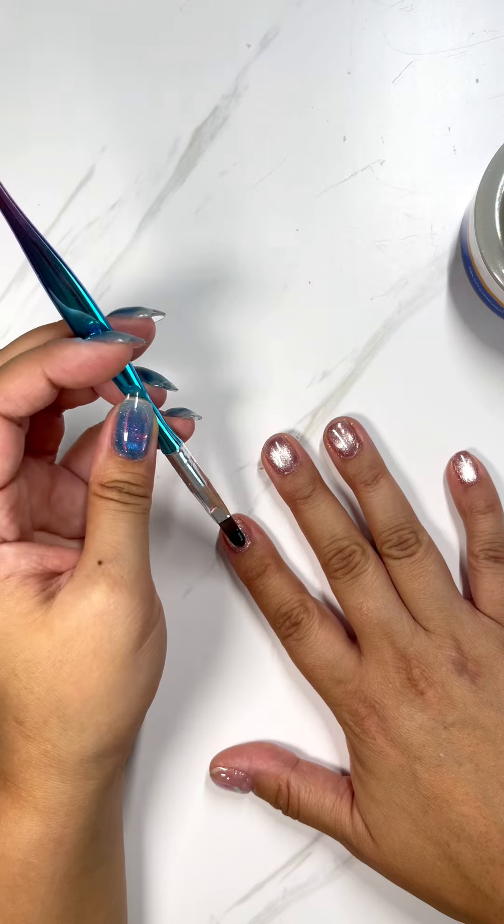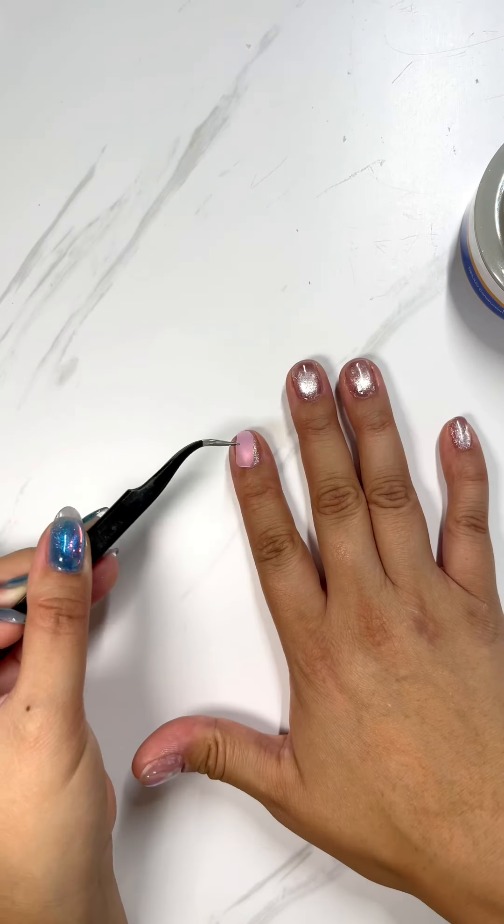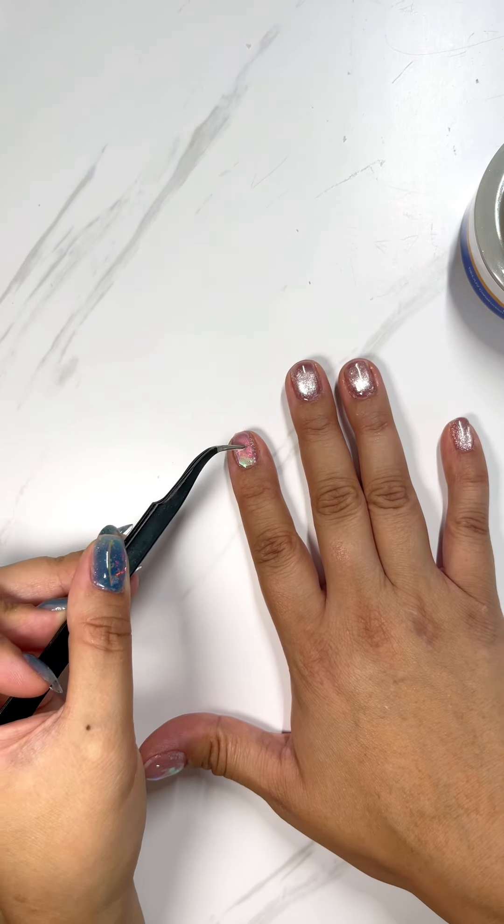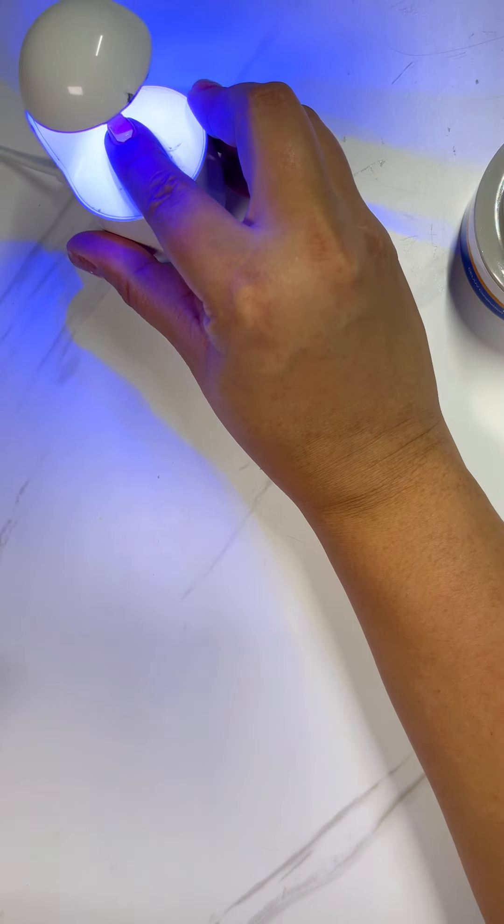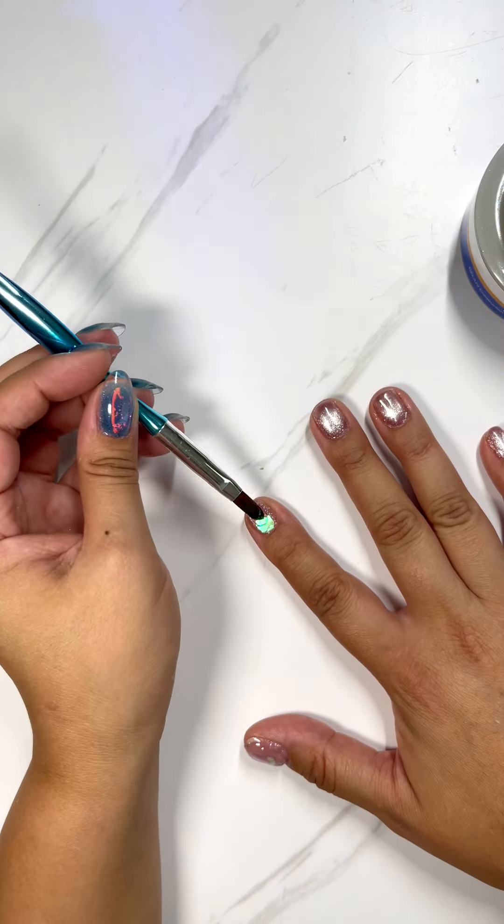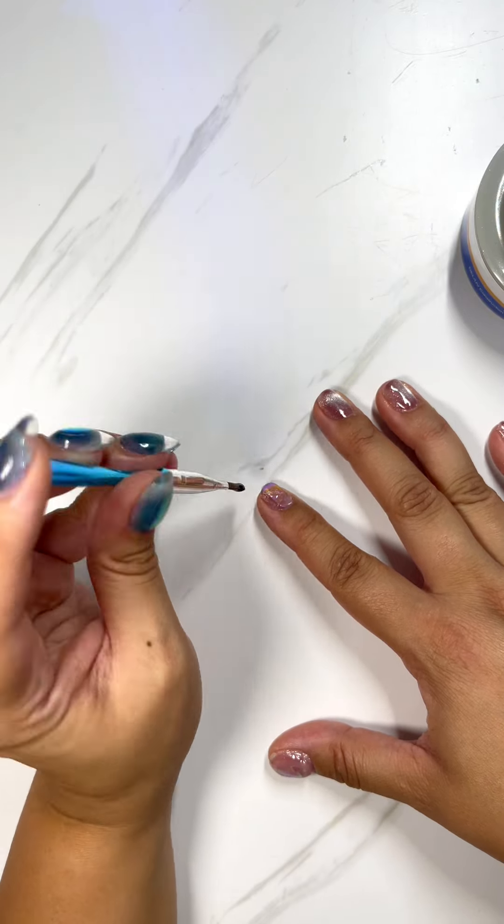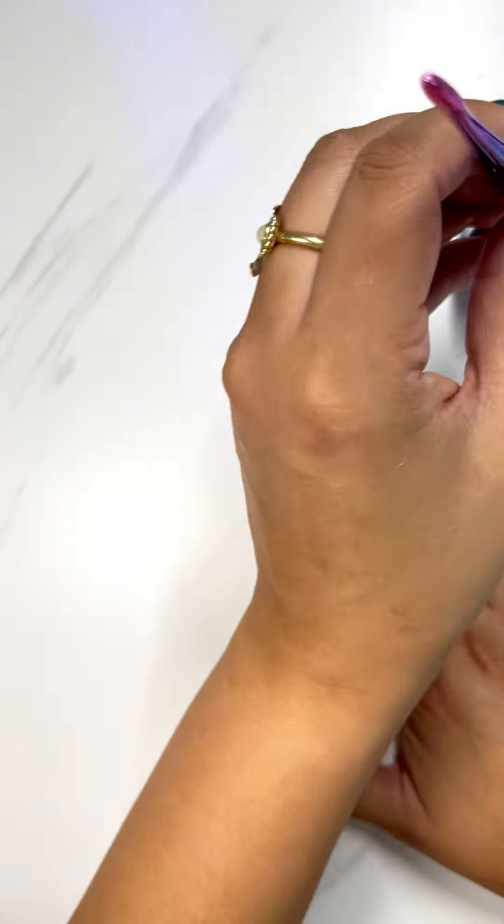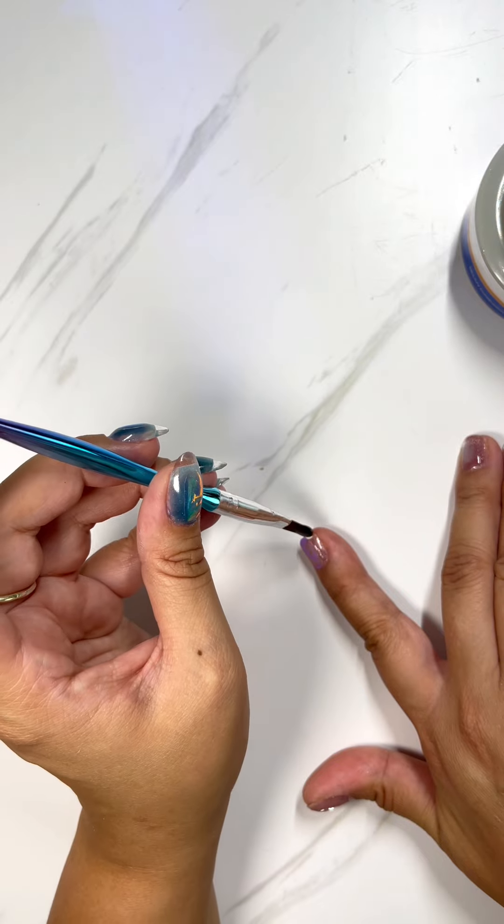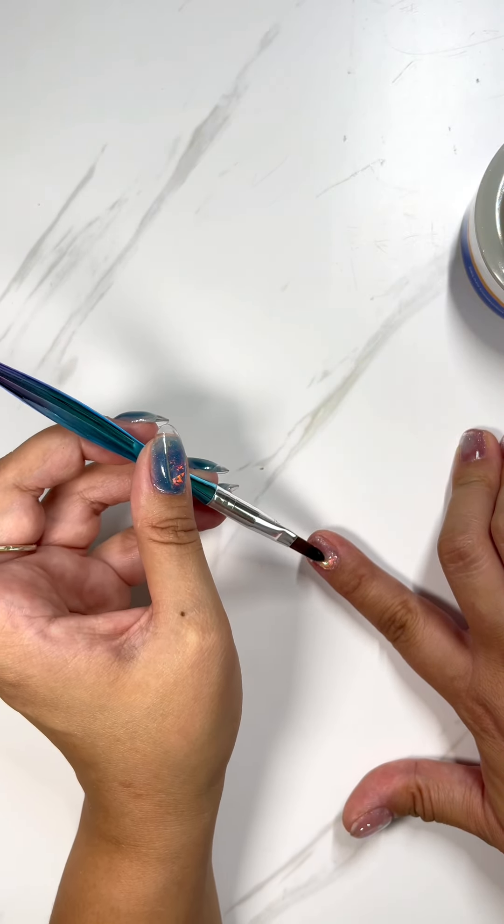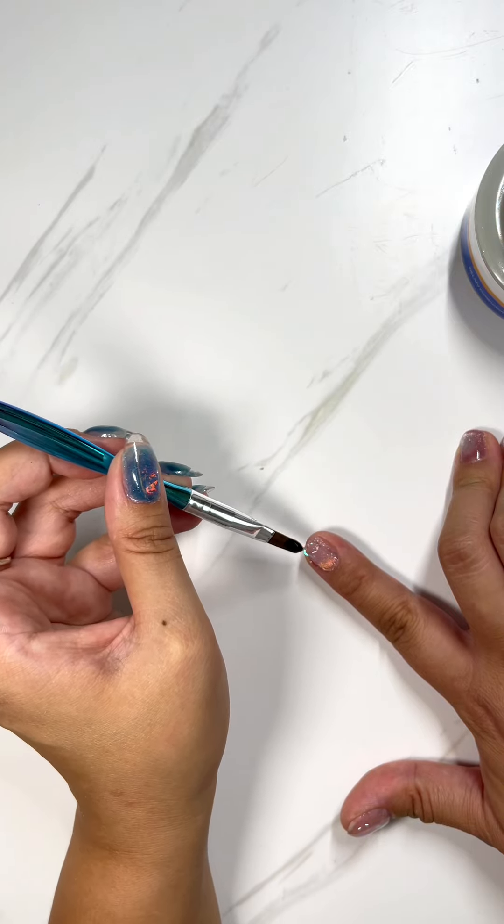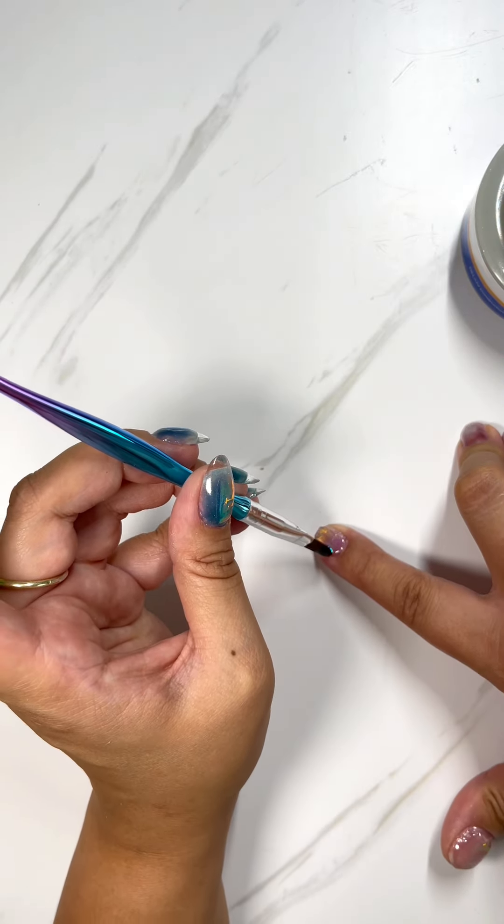The thicker the dome, the more bright and flashy the film will look because the thick gel over the top acts as a magnifier. So here I am doing it again, just sweeping the brush from side to side over the top of the film to encapsulate it.